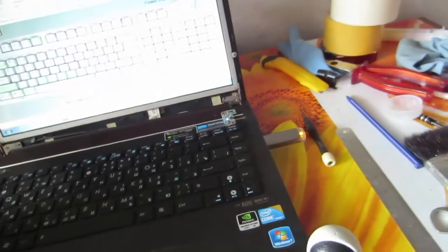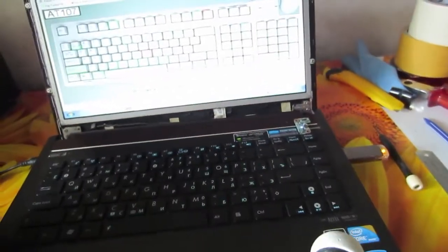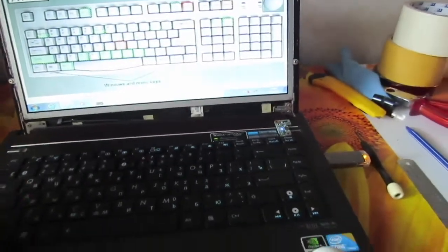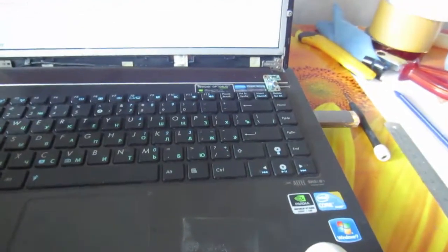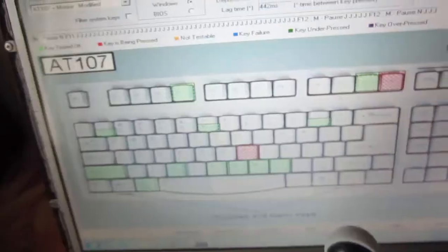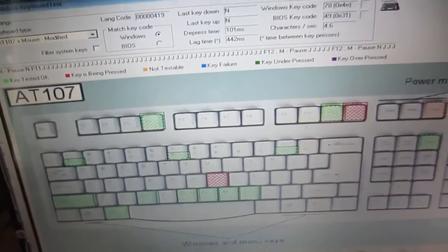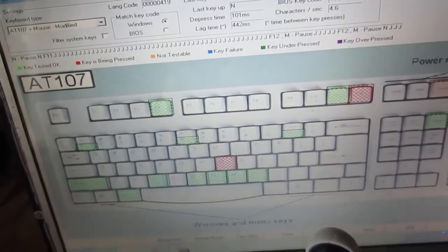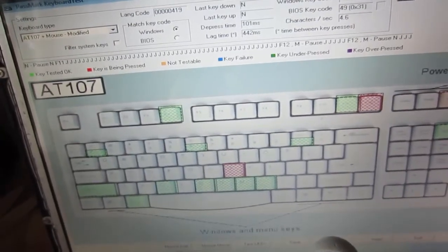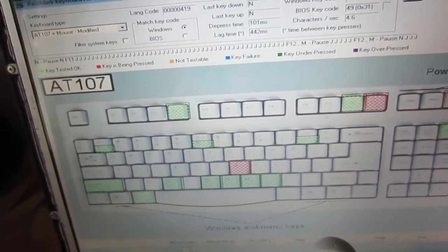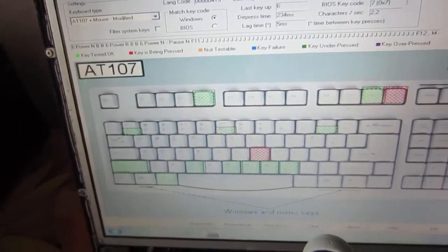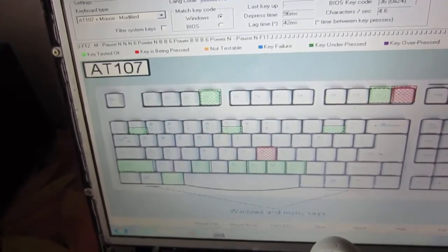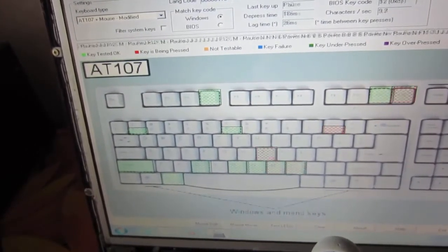We have an ASUS N82J with something that was spilled on it, and we can't really make a map of errors, a map of bad buttons, because when we're pushing some of them they're giving wrong codes.